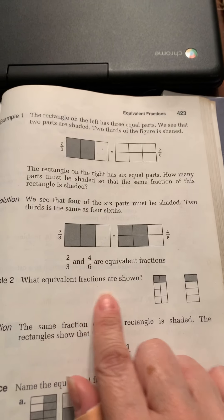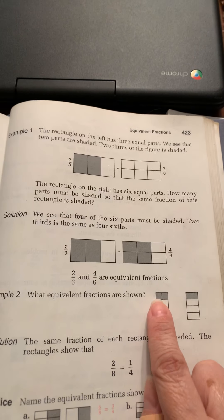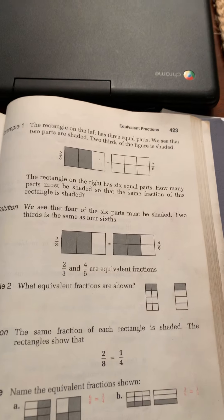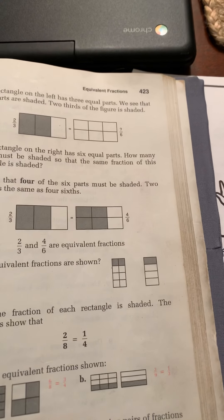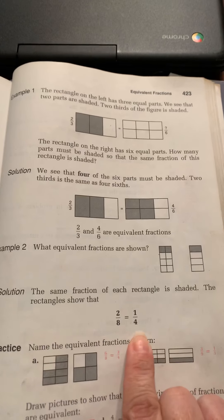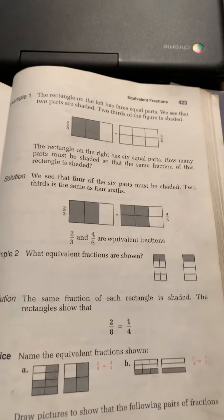Example two, what equivalent fractions are shown? Two out of one, two, three, four, five, six, seven, eight. Two-eighths is the same as one-fourth. And so you see the equivalent fractions here.